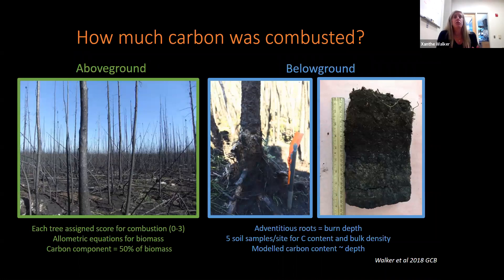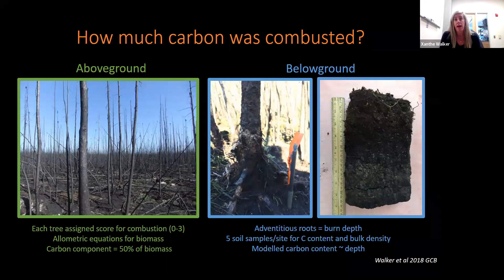First, we wanted to answer how much carbon was combusted, and we assessed both above- and below-ground combustion. To estimate the above-ground portion, we assigned each tree within a burn plot a combustion class, then used allometric equations to determine the amount of biomass and carbon combusted. To assess below-ground or soil organic layer combustion, we used biometric markers of adventitious roots on black spruce trees to assess burn depth, then collected soil profiles to determine carbon content, modeling this carbon component of soil as a function of depth to estimate carbon emissions from burn depth.